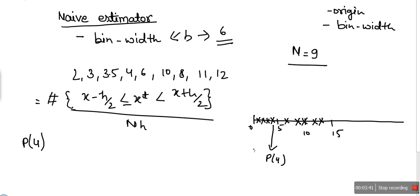So we will consider a bin from 1 to 7. How do I find these two boundaries for the bin? Just put your values in this expression: x minus h by 2, x plus h by 2.